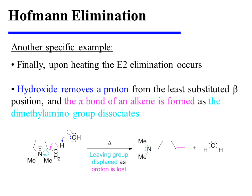Finally, upon heating, the E2 elimination occurs. Hydroxide removes a proton from the least substituted beta position and the pi bond of an alkene is formed as the dimethylamino group dissociates. Since the substrate was cyclic, the leaving group remains tethered to the alkene in the product.